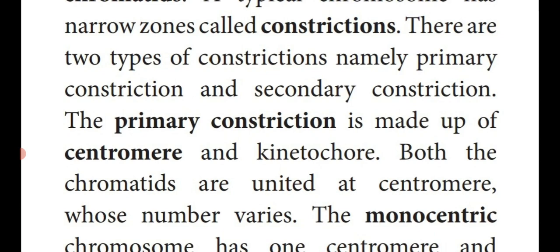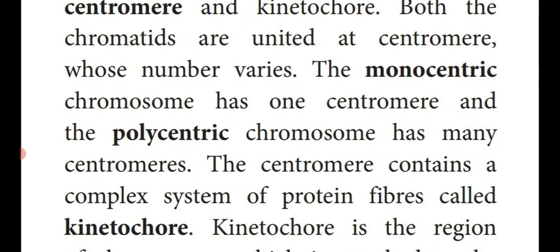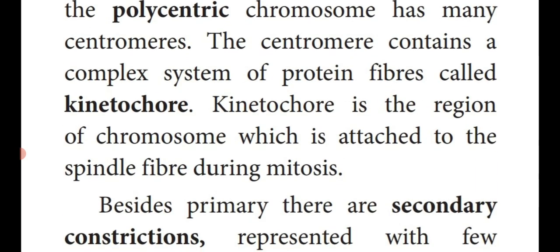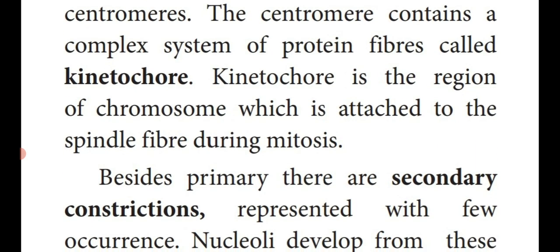The primary constriction is made up of the centromere and kinetochore. The two identical chromatids are joined with the help of the centromere. If the chromosome contains only one centromere it is known as monocentric. If the chromosome contains many centromeres it is known as polycentric. Based on the number of centromeres, chromosomes are divided into monocentric and polycentric. The centromere is made up of protein fiber called kinetochore, which attaches chromosomes to the spindle fiber during mitosis cell division.